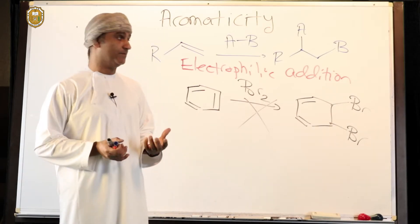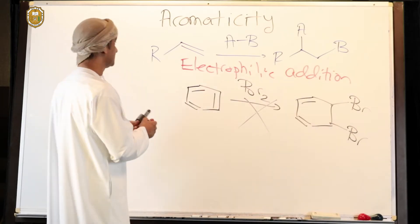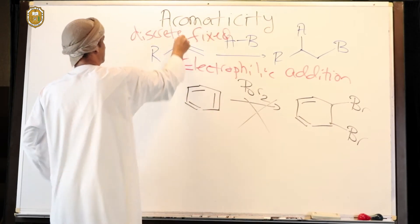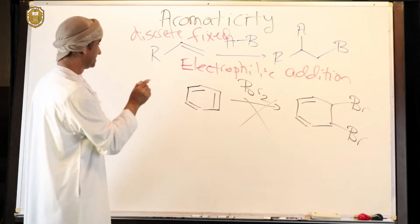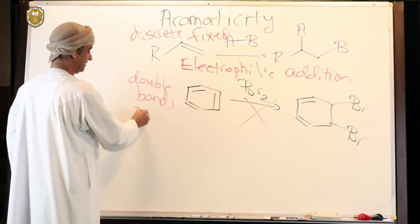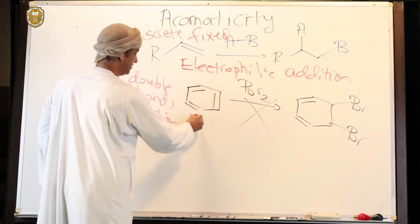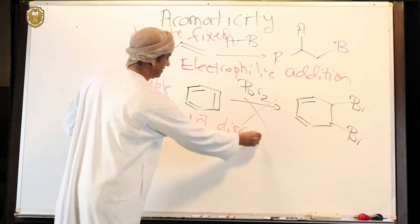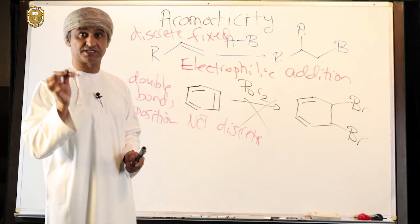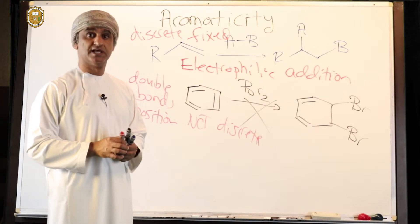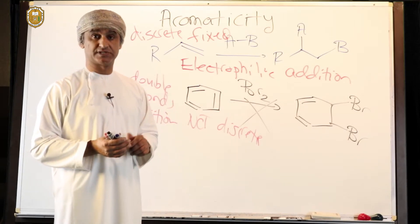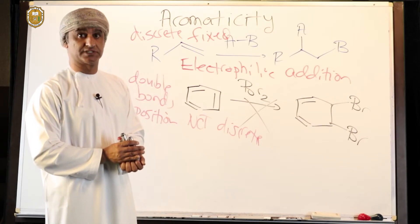The question is: why is that so? The position of the double bond in a normal alkene is fixed or discrete. In benzene, the positions of the double bonds are not discrete or fixed. If they were fixed, benzene would undergo electrophilic addition reactions — and it doesn't. Benzene undergoes its own special type of reactions, which is electrophilic aromatic substitution reactions, such as Friedel-Crafts alkylation or bromination using bromine with iron(III) bromide as a catalyst.